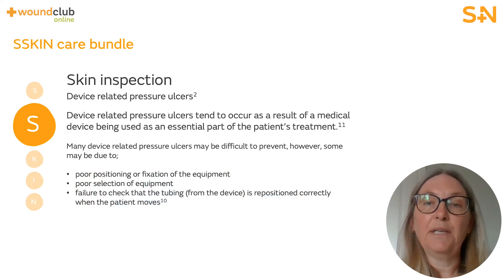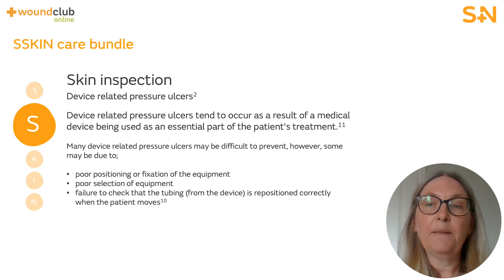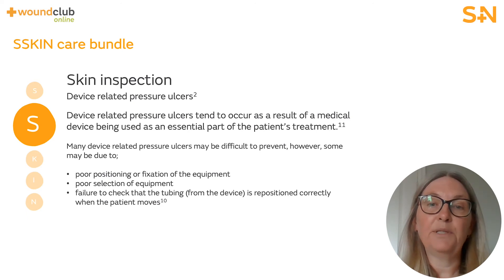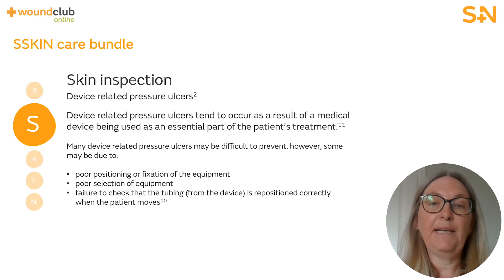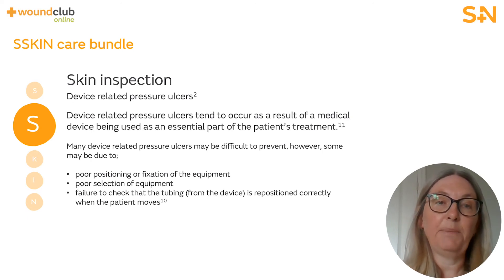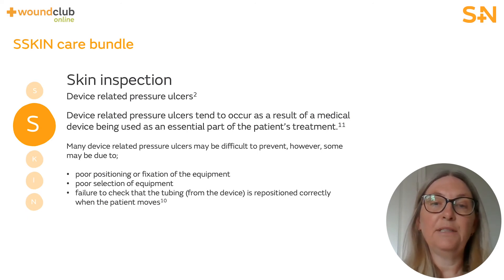Device related pressure ulcers tend to occur as a result of a medical device being used as an essential part of the patient's treatment, and most commonly occur on the face, head and neck. Interventions to help prevent device related pressure ulcers include: correct positioning and care of the equipment, use of thin hydrocolloids, film dressings or barrier products underneath the device to reduce moisture and friction, or the use of pressure reducing dermal pads. In summary, the key aspects of skin inspection are: early inspection equals early detection; daily skin inspection; educate on early signs of pressure damage; and always check for vulnerable areas.